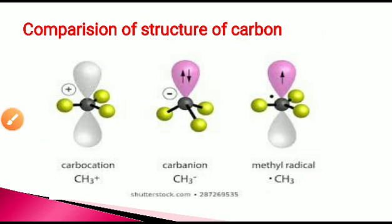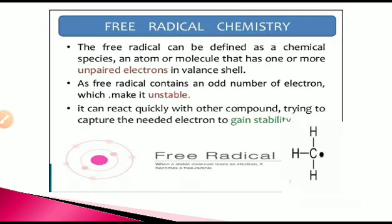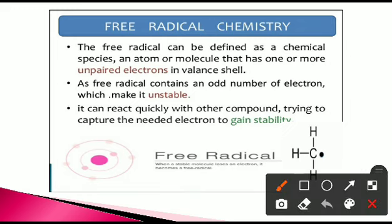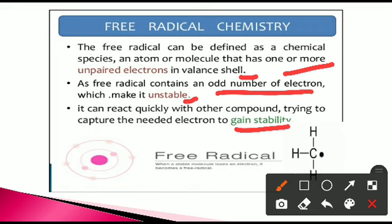Now we are going to learn free radical chemistry. We have covered carbocation and carbanion; let's start the third reactive intermediate, the free radical. A free radical can be defined as a chemical species — an atom or molecule — that has one or more unpaired electrons in its valence shell. The free radical contains an odd number of electrons, making it unstable and more reactive, reacting quickly with other compounds to gain stability.